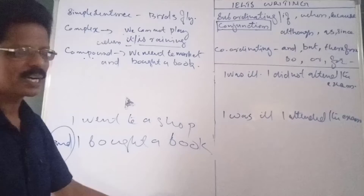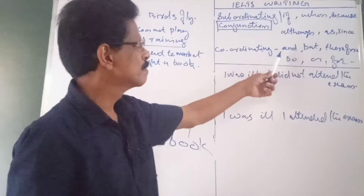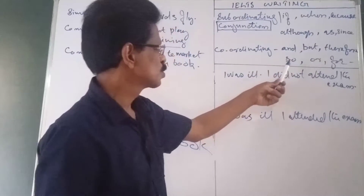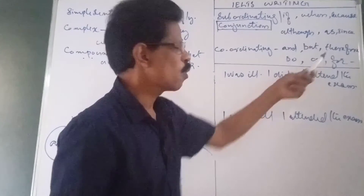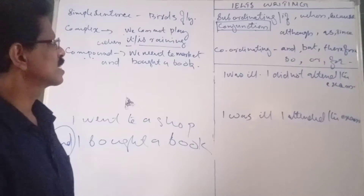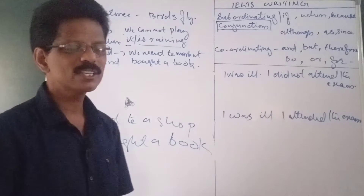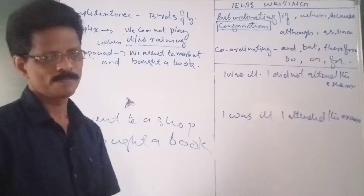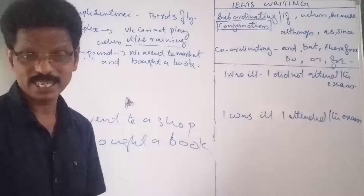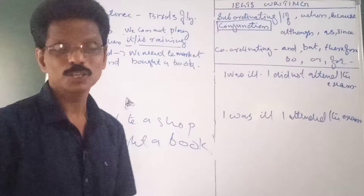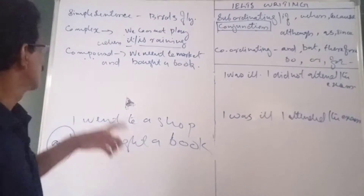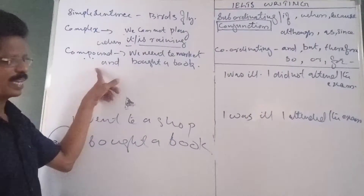Examples of co-ordinating conjunctions: 'and,' 'but,' 'therefore,' 'so,' 'or,' 'for' — many are there. Using a co-ordinating conjunction, you can connect two or more main clauses. Such sentences are known as compound sentences.